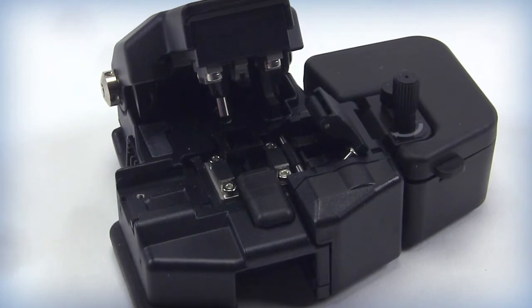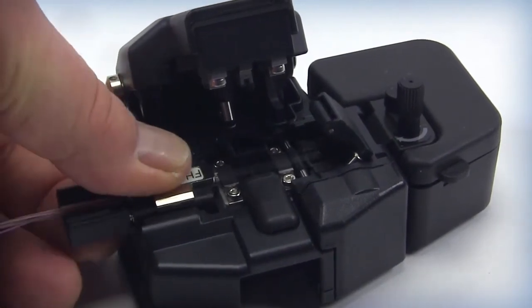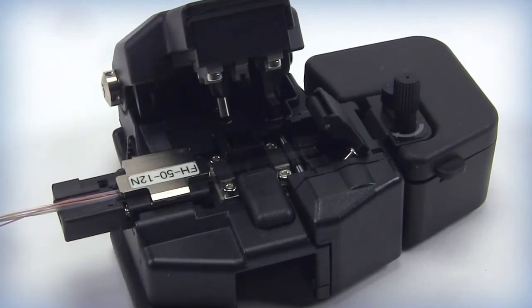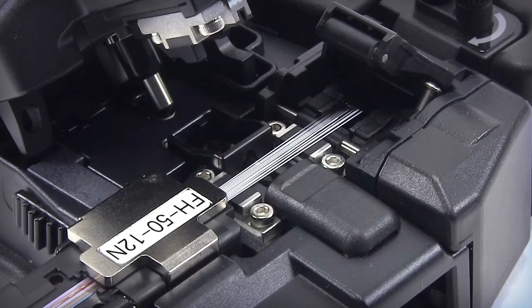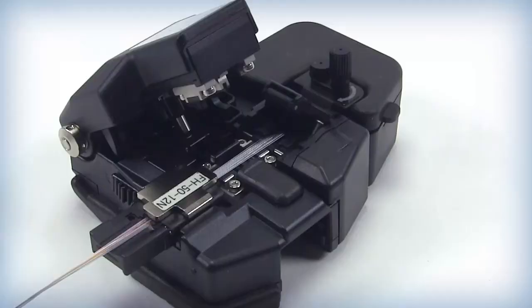Install the loaded fiber holder into the cleaver. Make sure it is fully seated and snapped down. Ensure all 12 fibers are long enough to be resting on the rubber roller. Make sure the fibers are not too long or bowed from the cleaver end. Ensure that the fibers are flat on the cleave platform and that they are not crossed. There should be no debris visible.